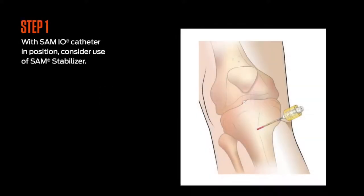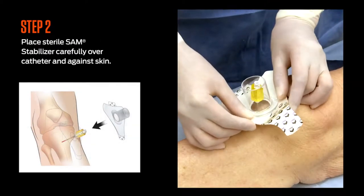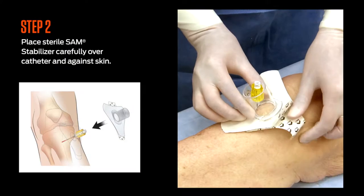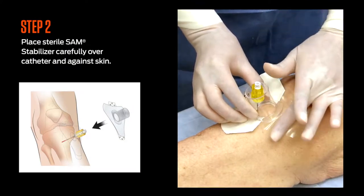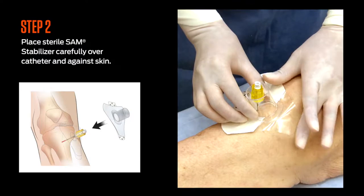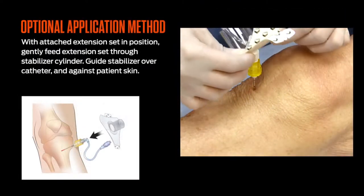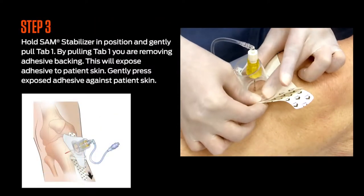The following is supplemental material. With the I.O. catheter in position, consider using the SAM stabilizer. There are two methods to attach the SAM stabilizer: place it carefully over the catheter and against the skin, then attach the primed extension set to the SAM.IO catheter; or alternatively, attach the extension set first and then apply the SAM stabilizer.